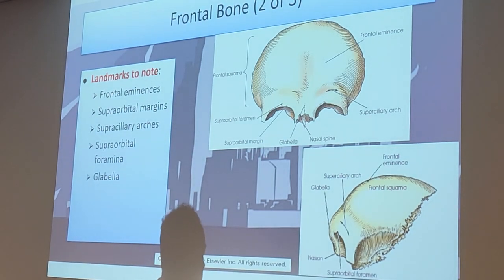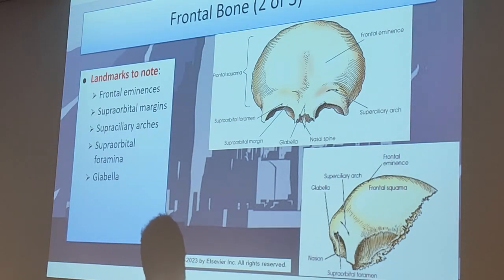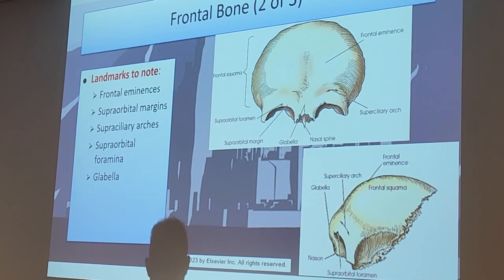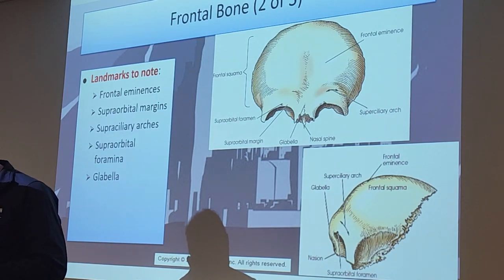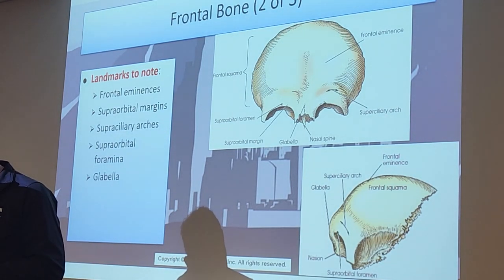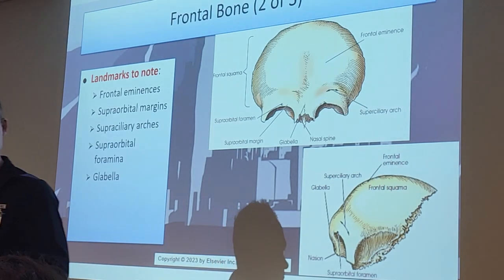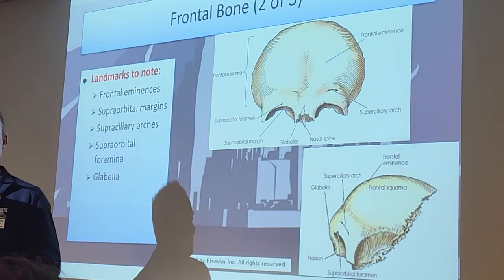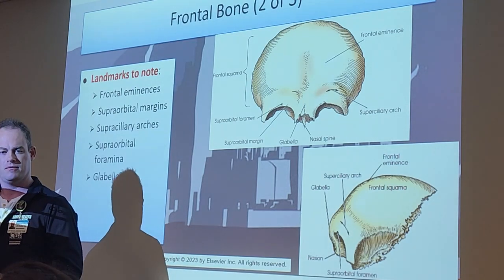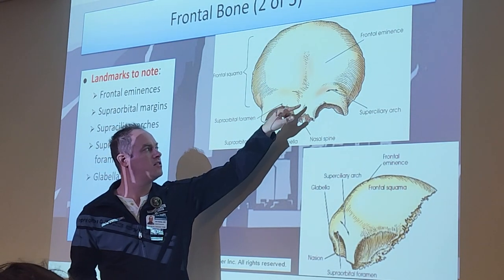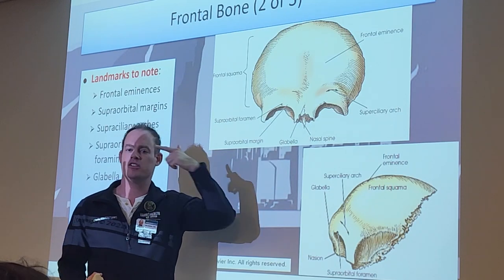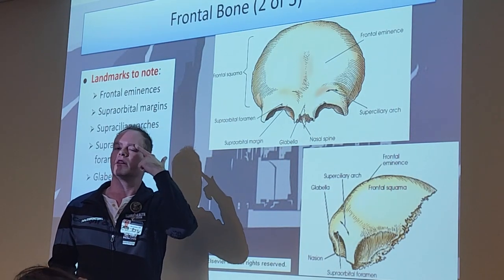The supraorbital margin is the superior border of the orbit. If you put your finger above your eye - don't poke your eye out - you can feel the whole circular border, the upper portion right here, under the eyebrow. The foramen is a hole; the margin is basically the area where the eyebrow sits - like a little ridge.